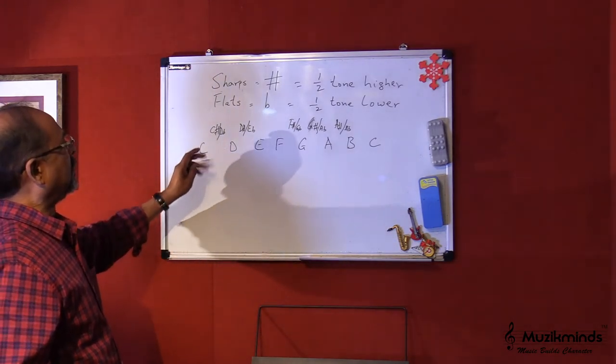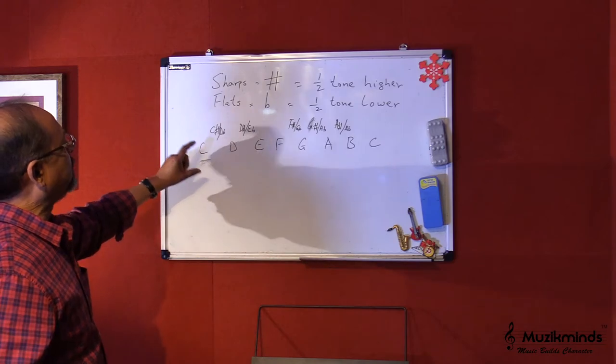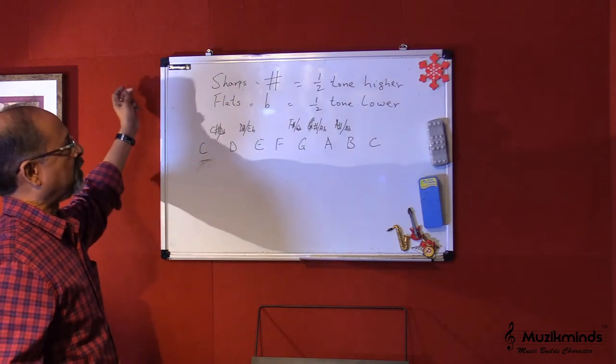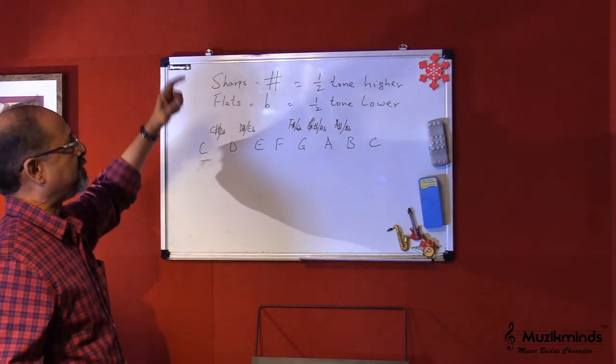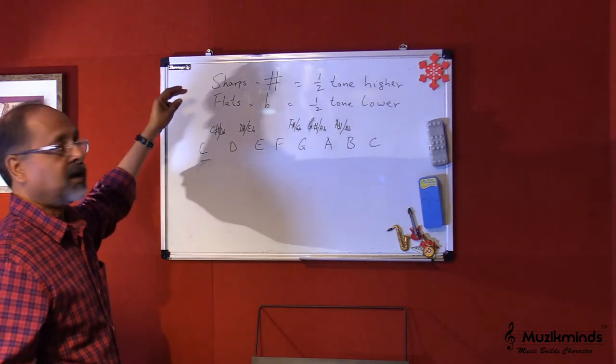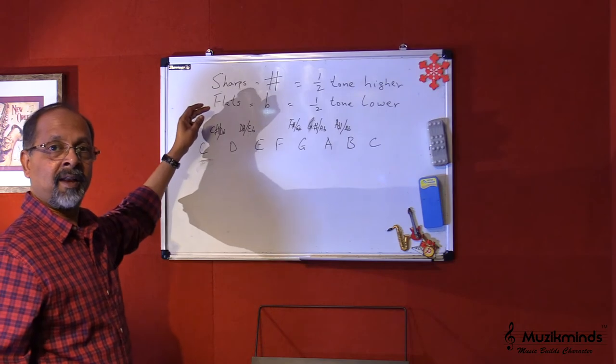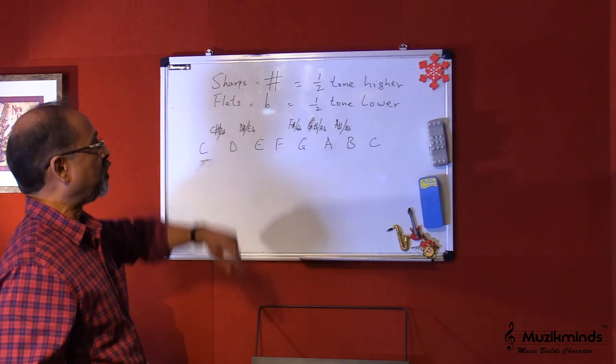So in short, it's very simple: a sharp is half a tone higher, and a flat is half a tone lower.